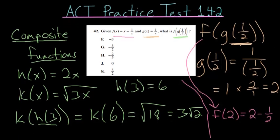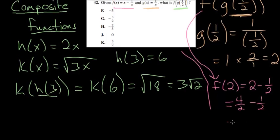And 2 minus 1 half, we could give them all the same denominator so we have 4 halves minus 1 half, which is 3 halves. And this simplifies to 3 halves.